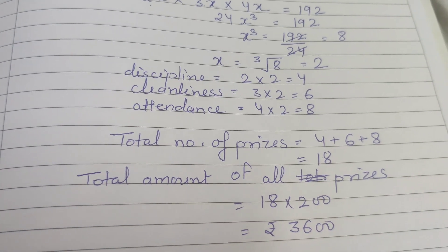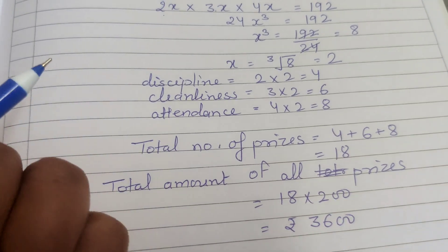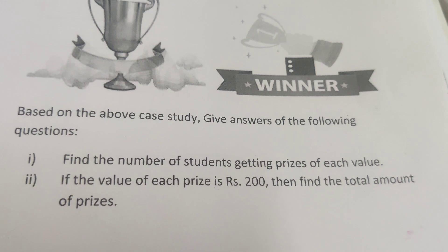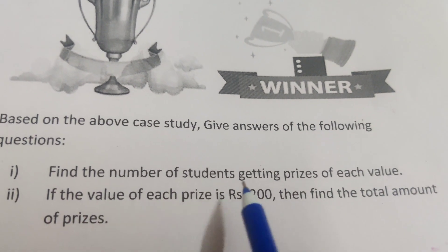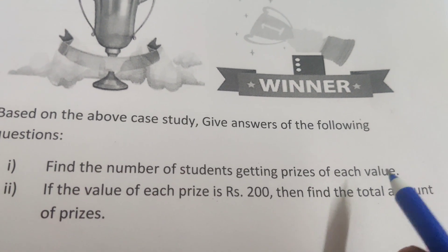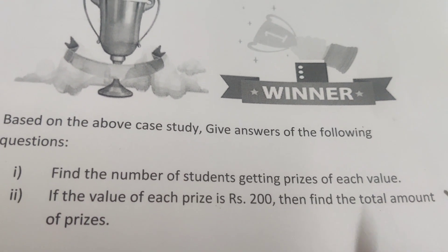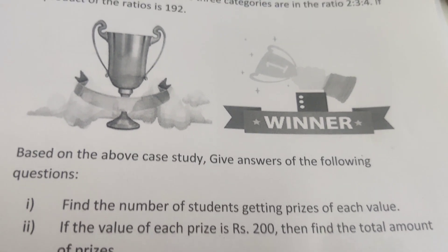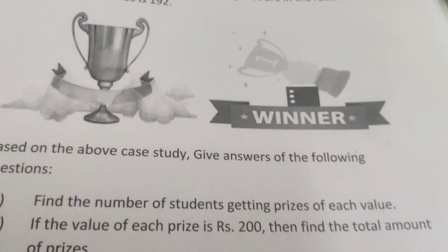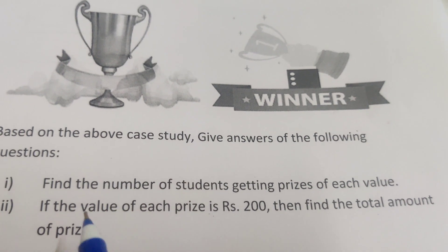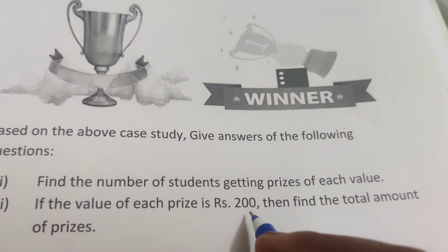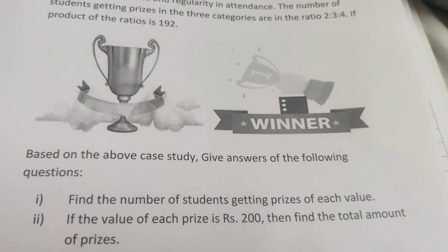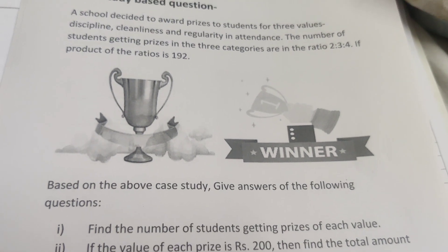So the answers are: Question 1 — the number of students getting prizes for each value are 4 (discipline), 6 (cleanliness), and 8 (attendance). Question 2 — if the value of each prize is rupees 200, the total amount is rupees 3600.